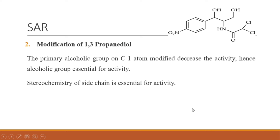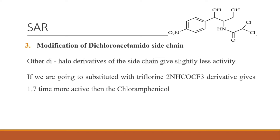The 1,3-propanediol should be in the threo (3R) configuration for optimal activity. Regarding modification of the dichloroacetamide side chain: other dihalo derivatives of the side chain give slightly less activity than the dichloroacetamide group.